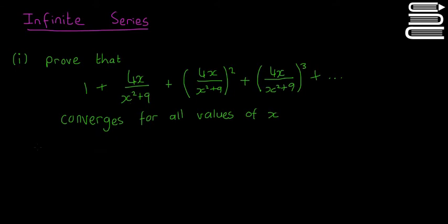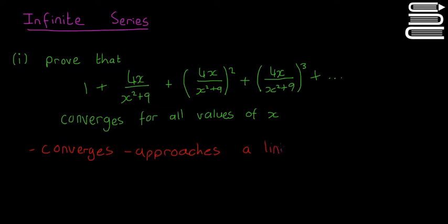Let's do a quick revision of what convergence means. If a series converges, that means it approaches a limit — it keeps going up and up until it gets really close to a number but never quite reaches it. You can find that limit with the formula: S∞ = a divided by (1 minus r).